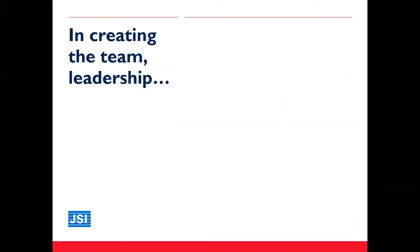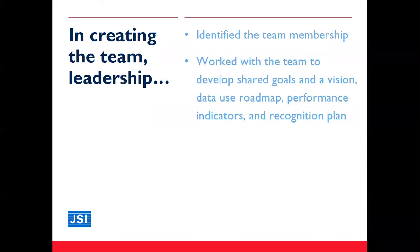So what has made this team so effective? Team effectiveness was developed by identifying and forming a team — leadership identified a group of people with a variety of skills. The team consists of planners, decision makers, team experts, experienced logisticians, and data analysts. Leadership then worked with the team to develop shared goals, a vision for its teamwork, and a data use roadmap. They identified indicators and prepared recognition plans for good-performing individuals, facilities, and institutes.